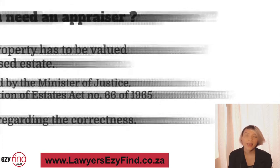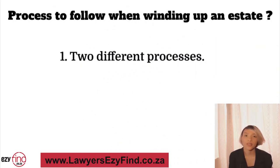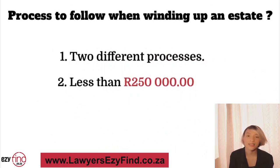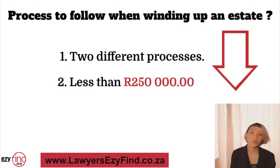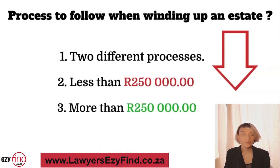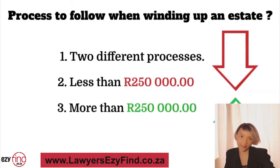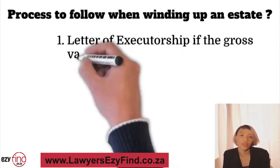There are two different processes in winding up the estate. If the assets in the deceased estate are less than 250,000 rand, the estate is to be administered in terms of section 18(3) of the Act — a simpler and quicker process with no requirements for the estate or liquidation and distribution accounts to be advertised. If the estate is more than 250,000 rand, the process is longer and more complex: the estate must be advertised in a local newspaper and the government gazette, and the liquidation and distribution account must also be advertised.